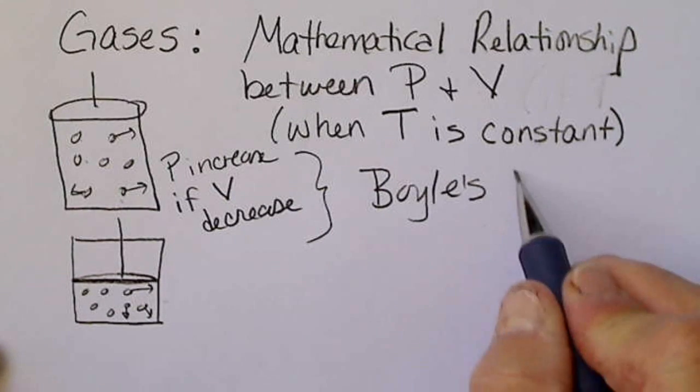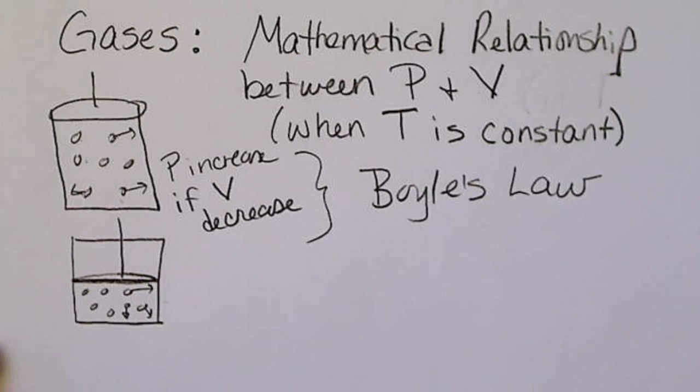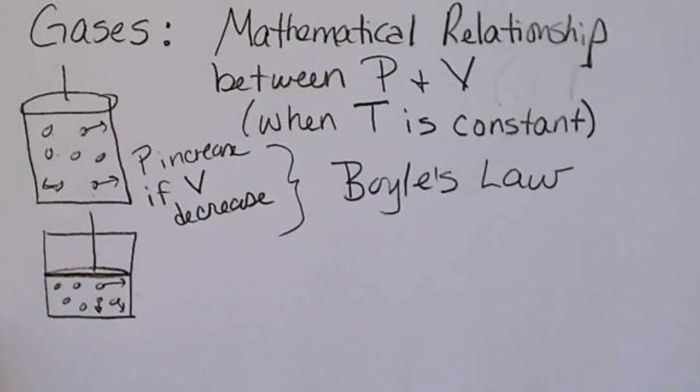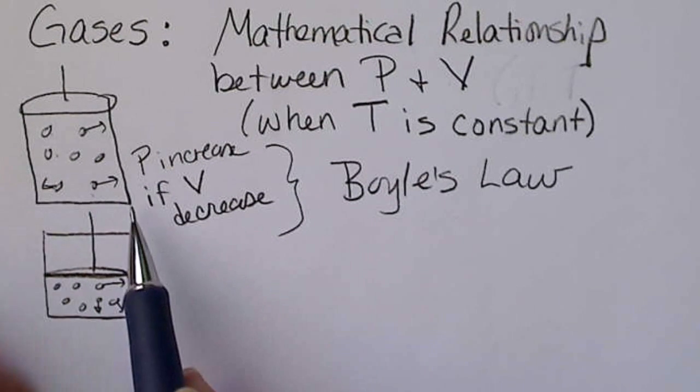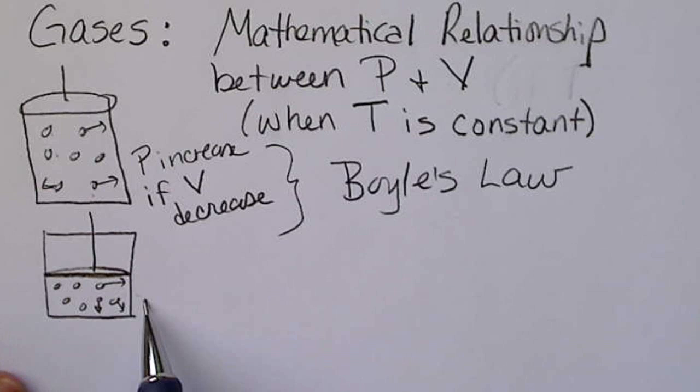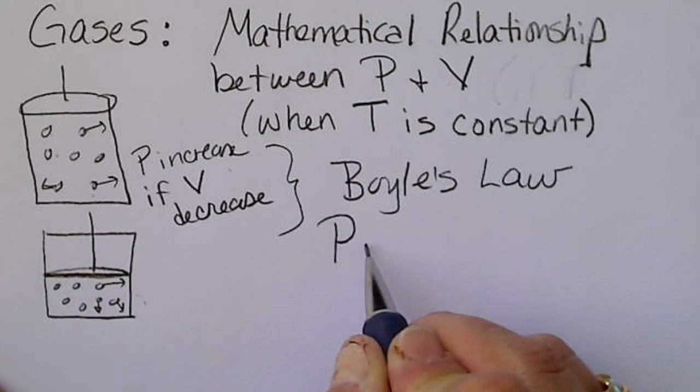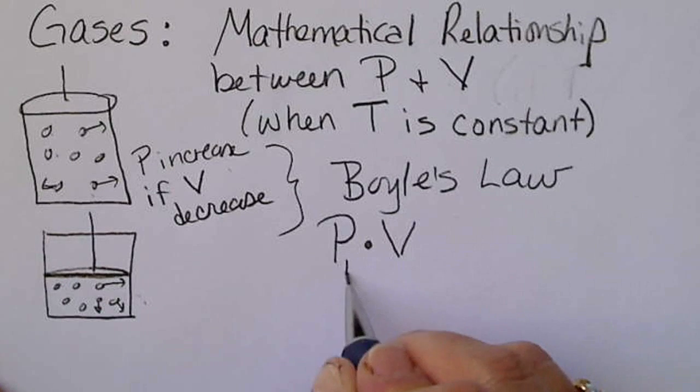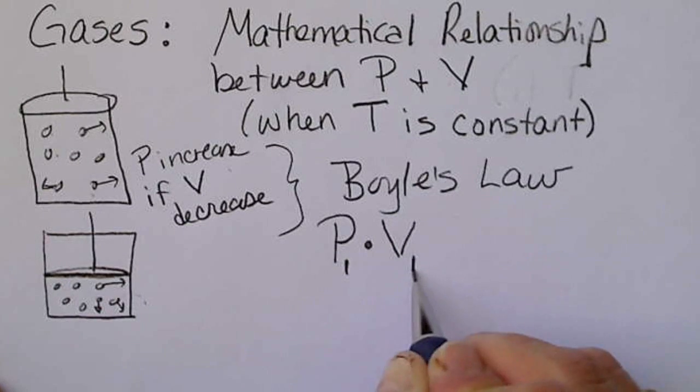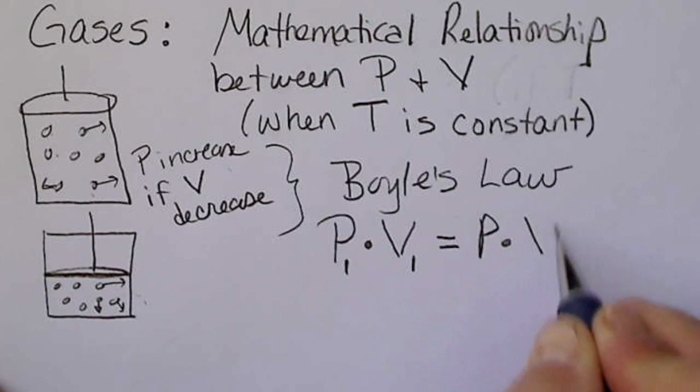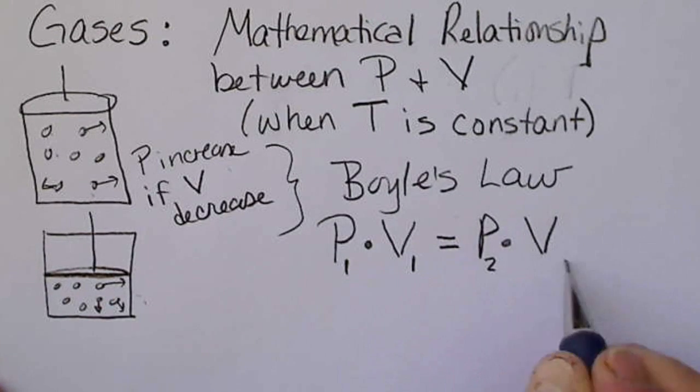This guy does not tell a gas what to do, of course, but he's the one that came up with the mathematical relationship for this. In fact, if we cut the volume down by half, the pressure is going to increase by exactly two. So Boyle's Law states that the pressure times the volume at instance one, so we say P1V1, is going to equal the pressure times the volume at instance two.